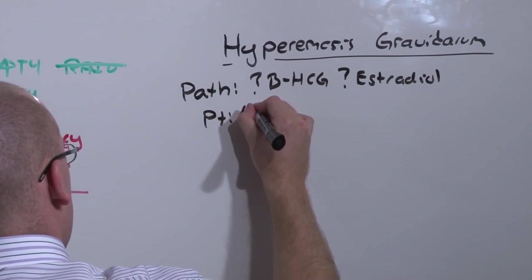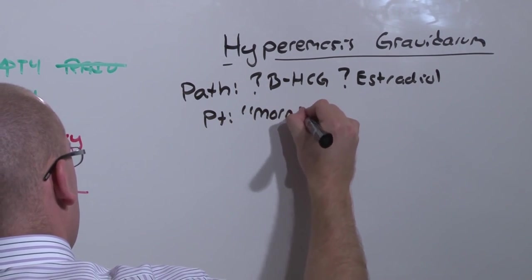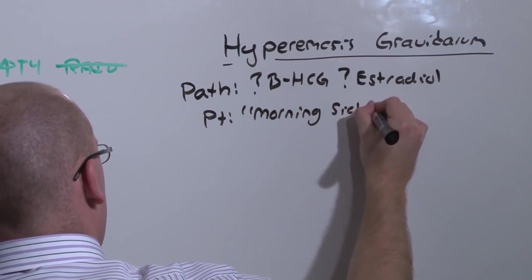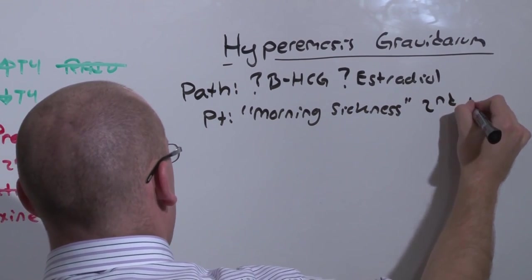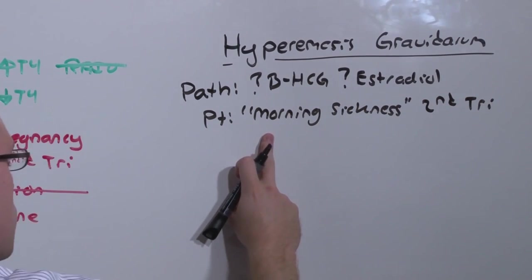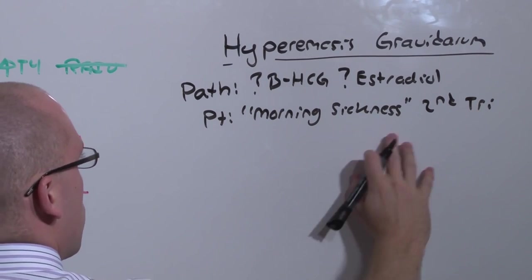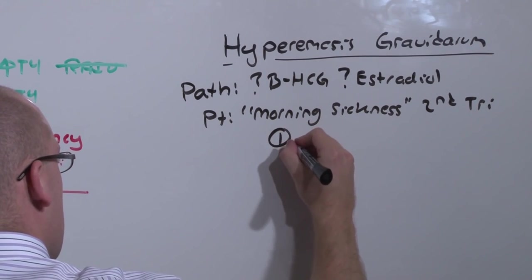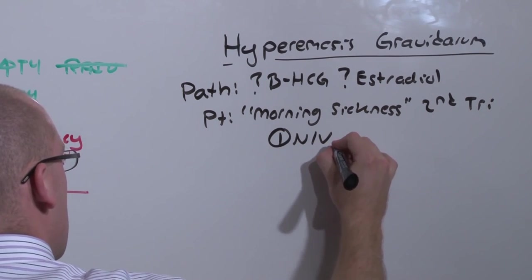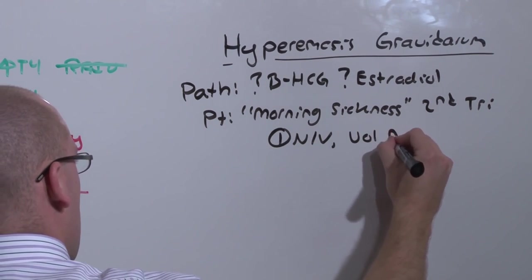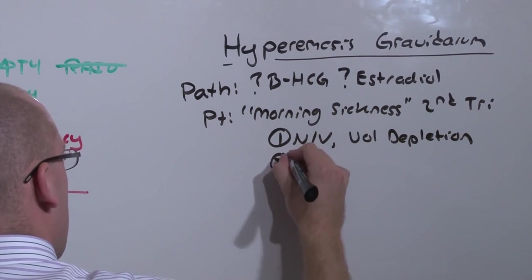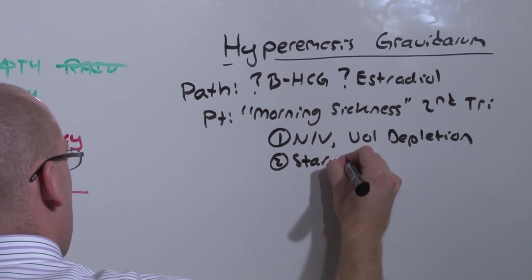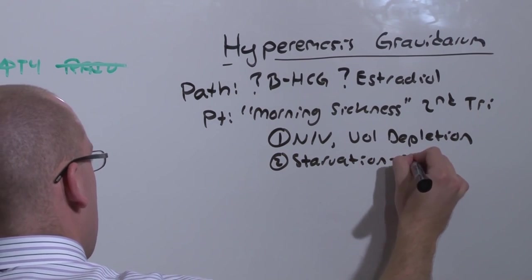But the patient is going to present with morning sickness. But it's a really bad morning sickness that lasts into the second trimester. Morning sickness should get better by the first trimester. But it's so bad that it's not just nausea and vomiting, it's nausea and vomiting so bad that it causes volume depletion.